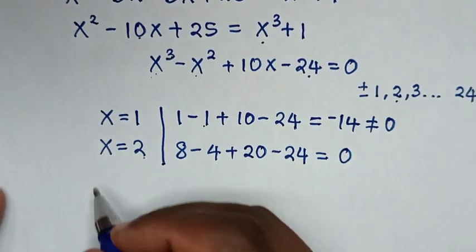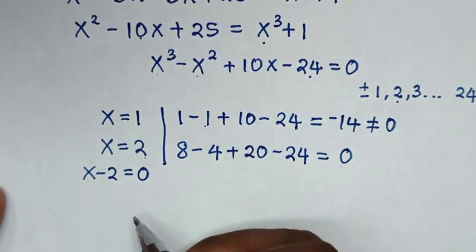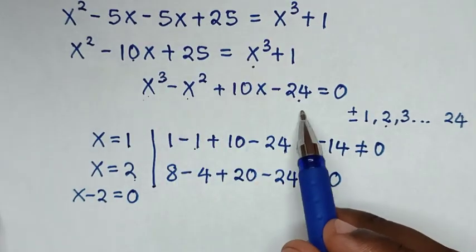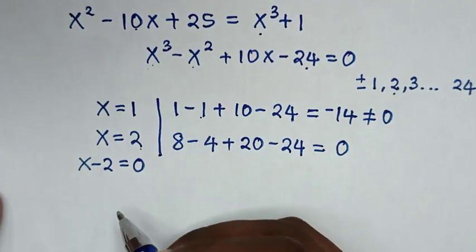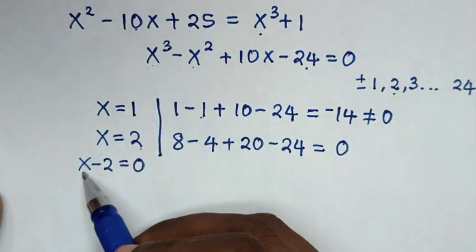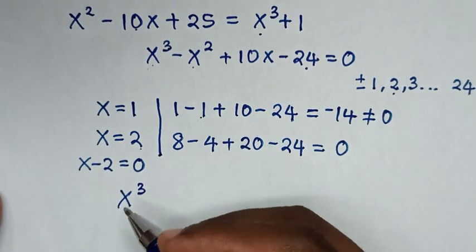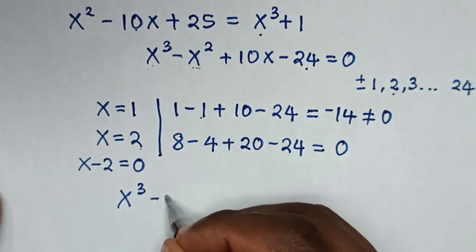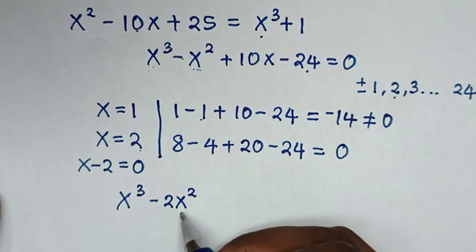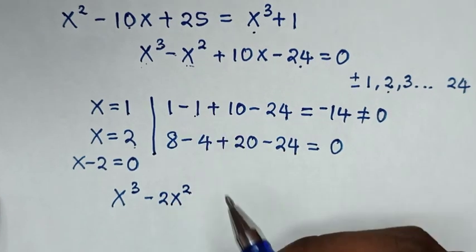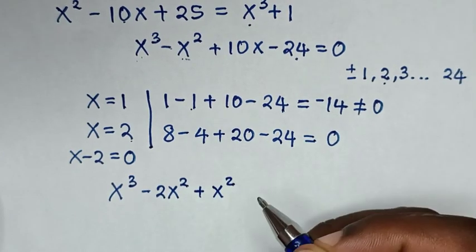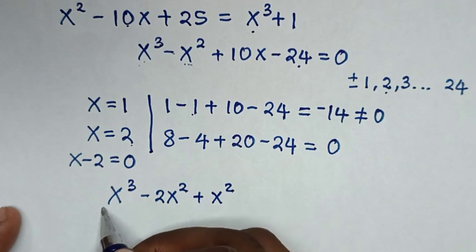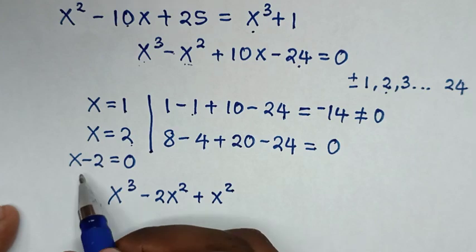Then we take 2 to the left side, so it will be x minus 2 = 0. Now we make (x - 2) a factor divisible into the cubic equation. For the first group, x³ can be divided by x. So it will be x³, then for this to be divisible by negative 2, it will be minus 2x². Now minus 2x² gives us negative x² if we add x².